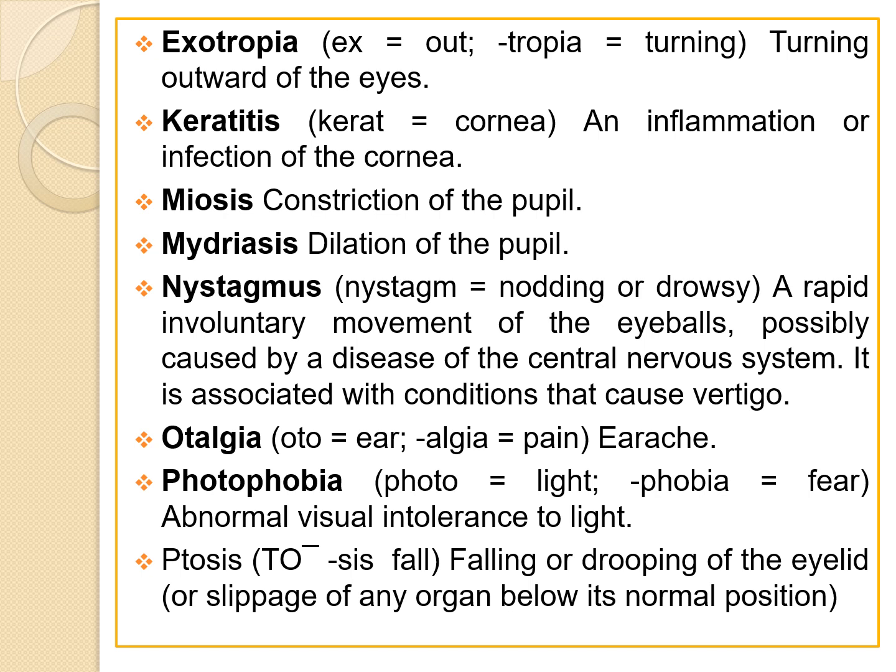The next term is keratitis. 'Kerat' means cornea, so keratitis is inflammation or infection of the cornea. The next term is miosis, which is constriction of the pupil. Mydriasis, on the other hand, is dilation of the pupil.